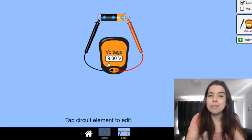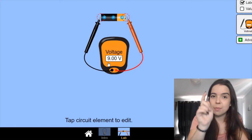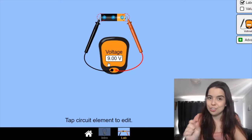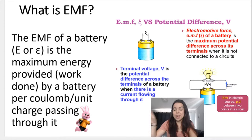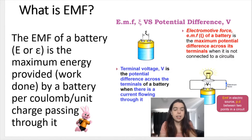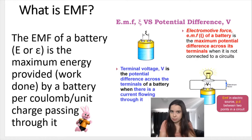If I connect the terminals of my voltmeter across the battery, the voltmeter reads what we call the EMF of that battery. The EMF is the maximum energy that the battery can provide per unit charge. So if the EMF of my battery is 5 volts, the battery can supply a maximum of 5 joules per one coulomb of charge passing through it.